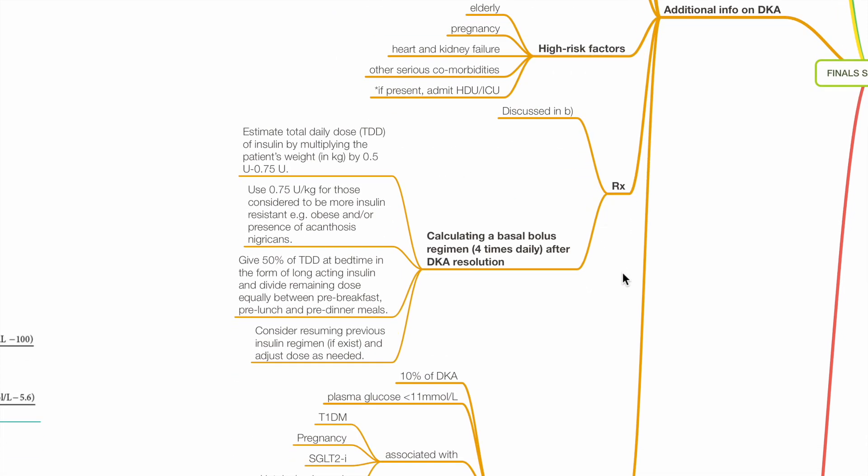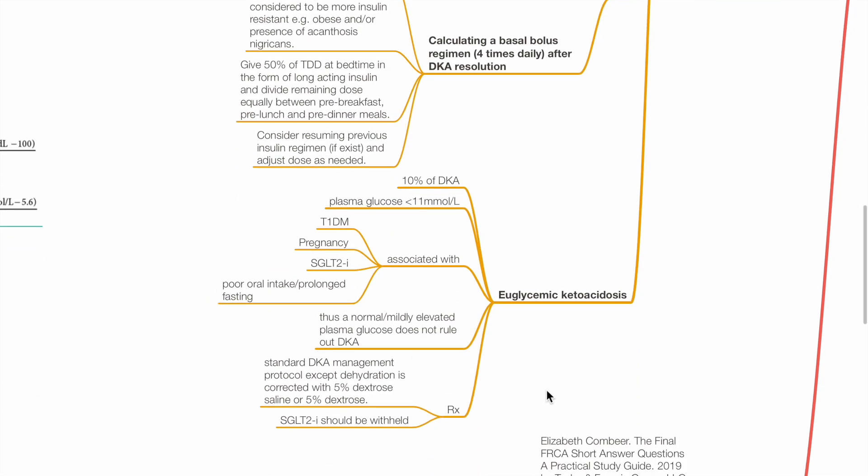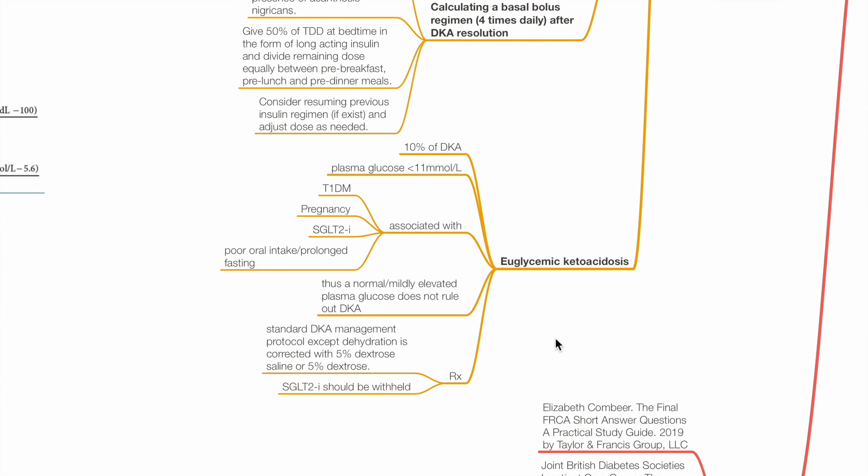Treatment has been discussed in Part B. Calculation of basal bolus regimen after DKA resolution is included here. For euglycemic ketoacidosis, this consists of 10% of DKA. Plasma glucose is less than 11. This is associated with type 1 diabetes mellitus, pregnancy, use of SGLT2 inhibitors, and poor oral intake or prolonged fasting. Thus a normal or mildly elevated plasma glucose does not rule out DKA. Treatment is with standard DKA management except dehydration is corrected with 5% dextrose saline or 5% dextrose. SGLT2 inhibitors should be withheld.